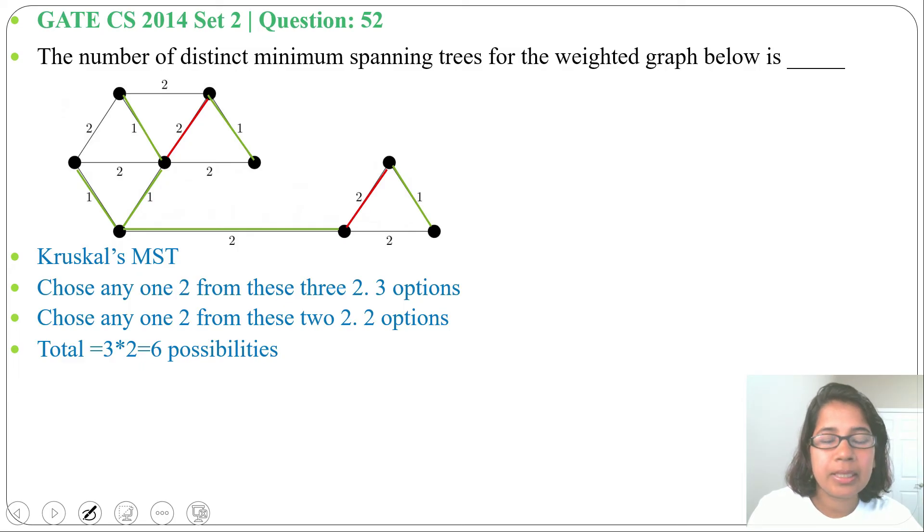In this question, just you need to check how many options are possible. From these three 2s, 1 option. From these two 2s, 1 option. So here 2 possibilities, here 3 possibilities. Simply multiply, we'll get answer 6.